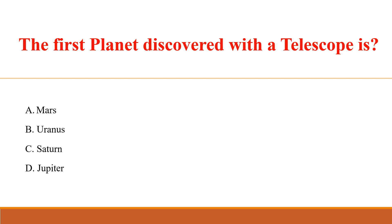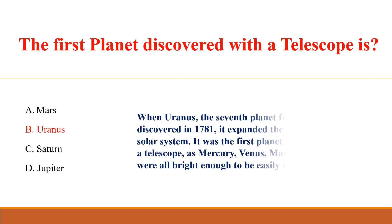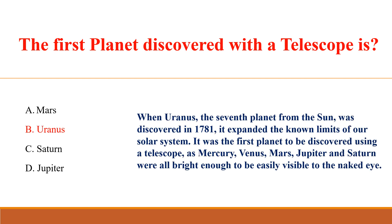The first planet discovered with a telescope is? Answer: B. Uranus. When Uranus, the 7th planet from the sun, was discovered in 1781, it expanded the known limits of our solar system. It was the first planet to be discovered using a telescope, as Mercury, Venus, Mars, Jupiter, and Saturn were all bright enough to be easily visible to the naked eye.